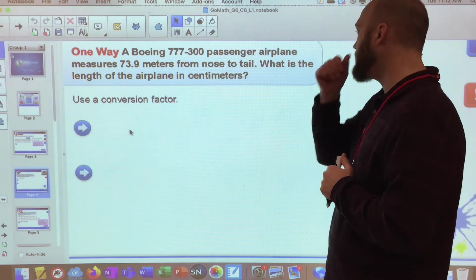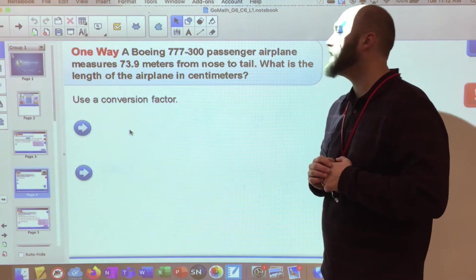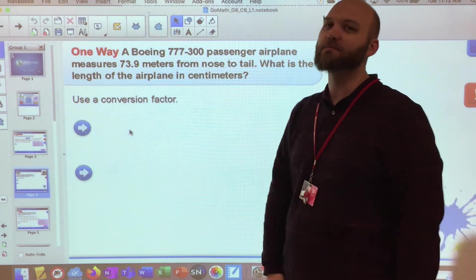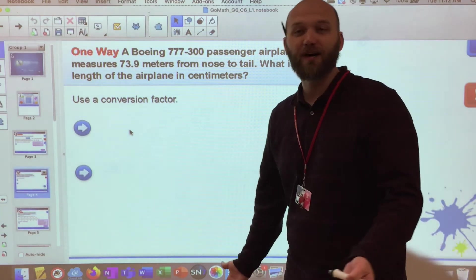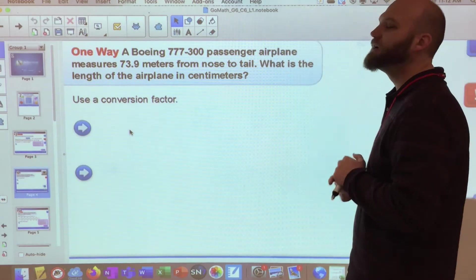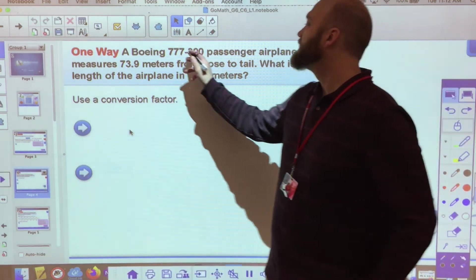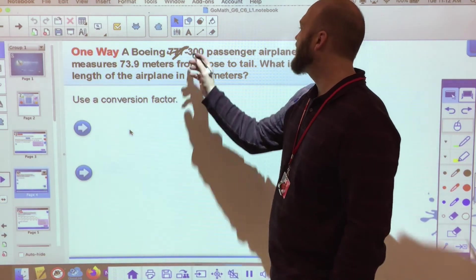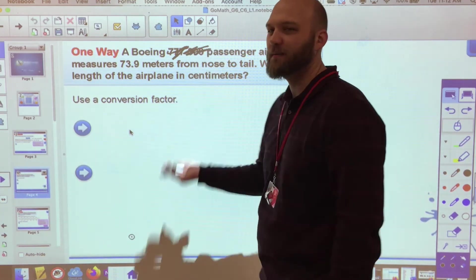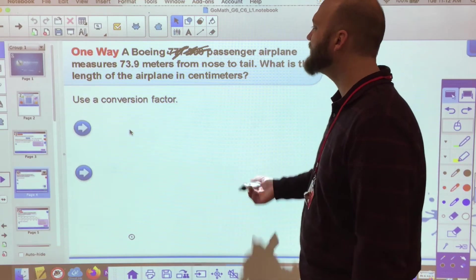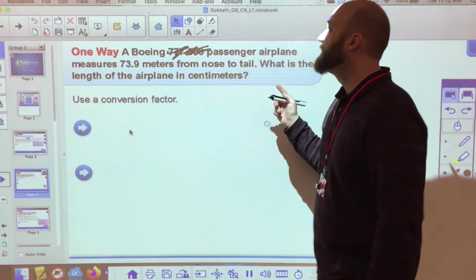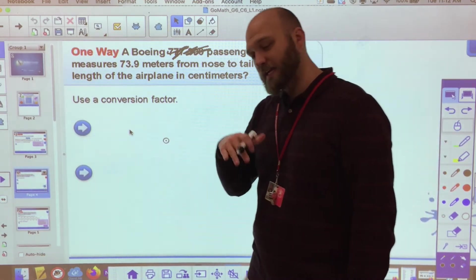So if we're seeing where things fit together and how all of this makes sense, we can make this very easy. So a Boeing 777-300 passenger airplane measures seventy-three and nine-tenth meters from nose to tail. What is the length of the airplane in centimeters? First off, I don't know why you need to know this, but it's a problem that we were thrown out. There's some distractors in this. 777, it doesn't really matter what the plane is. And a 300 passenger, I don't care how many people it holds.